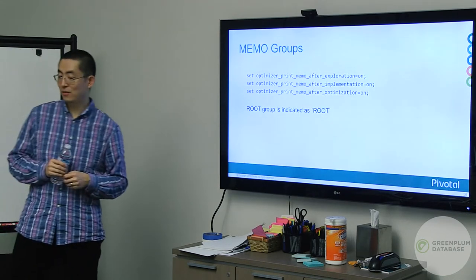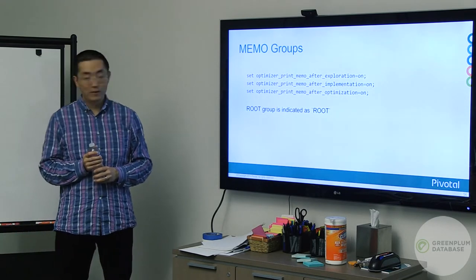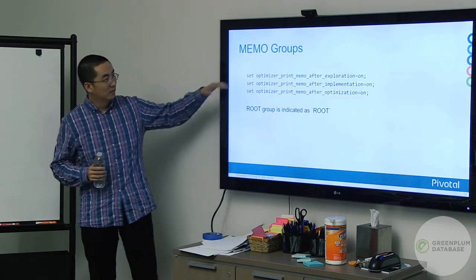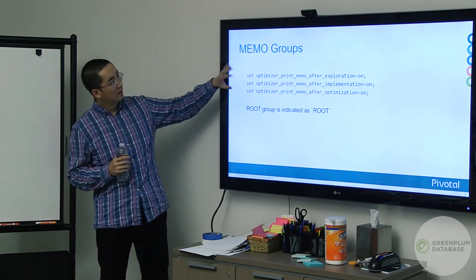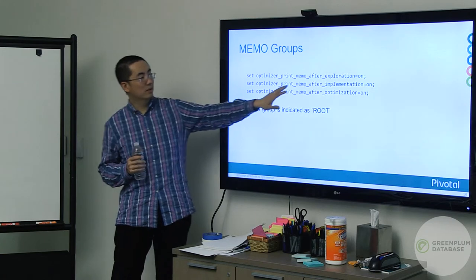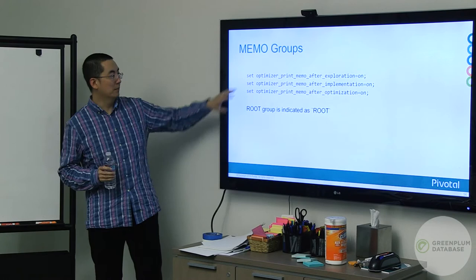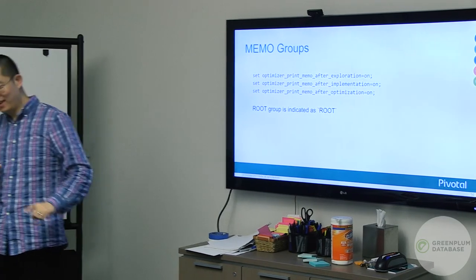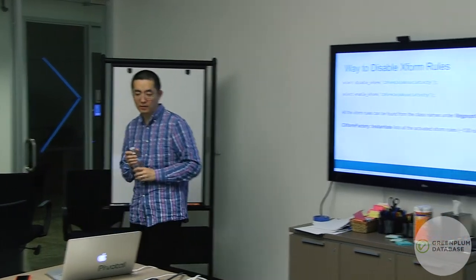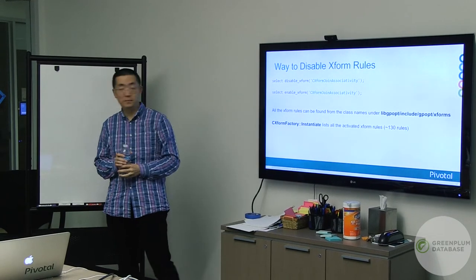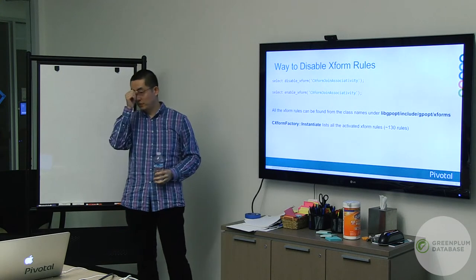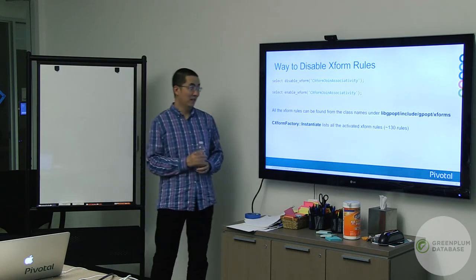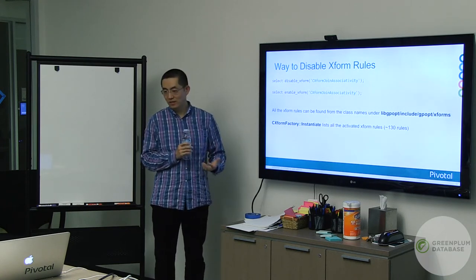The memo dump breaks down into stages: stage one exploration, then implementation where logical becomes physical, then the final optimization/MVP step. To find the root group, just search for 'root' — it doesn't have to be the first or last group. Another handy tool directly through GPDB is turning on and off specific transformation rules — very useful to narrow down whether an issue relates to your rule or is unrelated, letting you quickly toggle your new rule on or off to see how things behave.